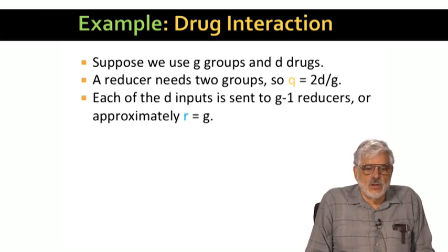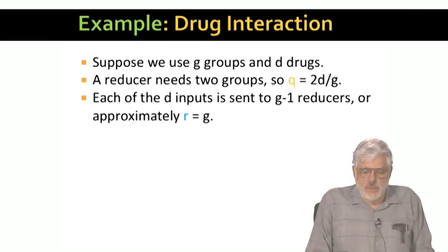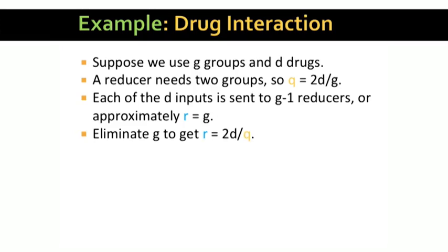We can figure out the replication rate directly, since each drug is sent to g minus 1 reducers, one reducer for each pair consisting of its group and one of the other groups. We'll assume g is fairly large, so we'll drop the minus 1, and just say the replication rate is g. Now we have R and Q in terms of g. We can eliminate g and get R equals 2d over Q. This is interesting. It says that the replication rate and reducer size are inversely proportional to each other.